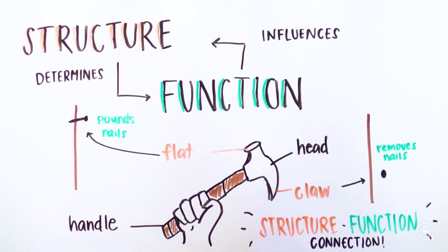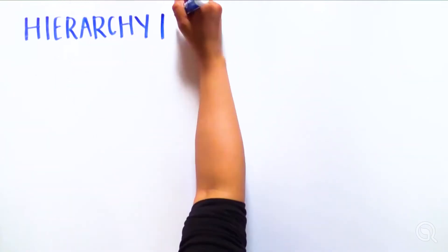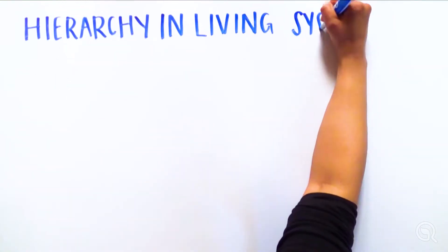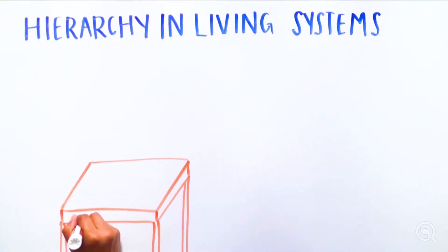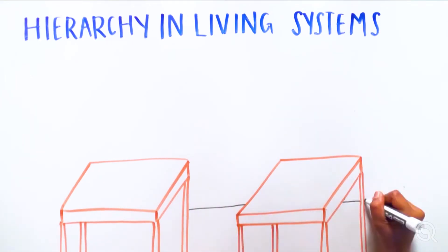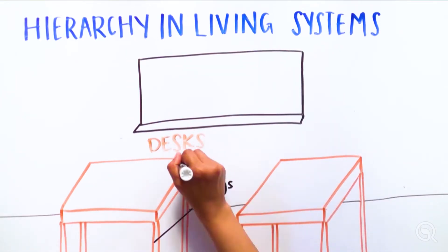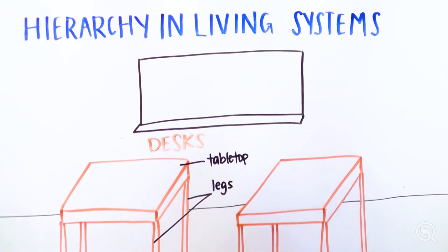This is the structure-function connection. Now let's think about living systems, which are organized as a hierarchy. Consider a school with classrooms. Within each classroom are desks, and each desk is made of legs and a tabletop. Every larger thing is made up of smaller things, and each level has specialized structure and function.